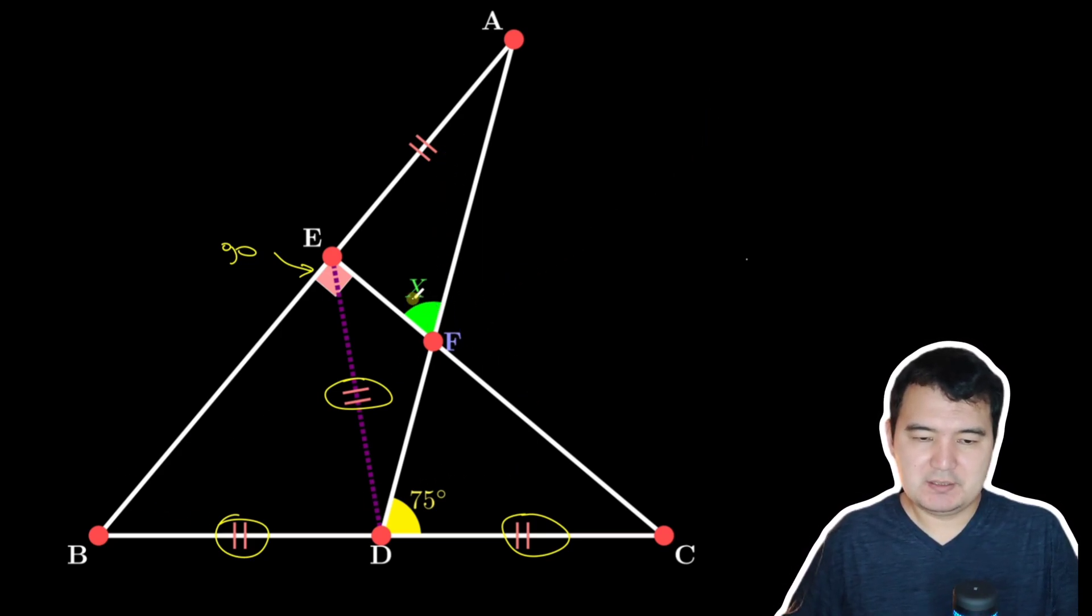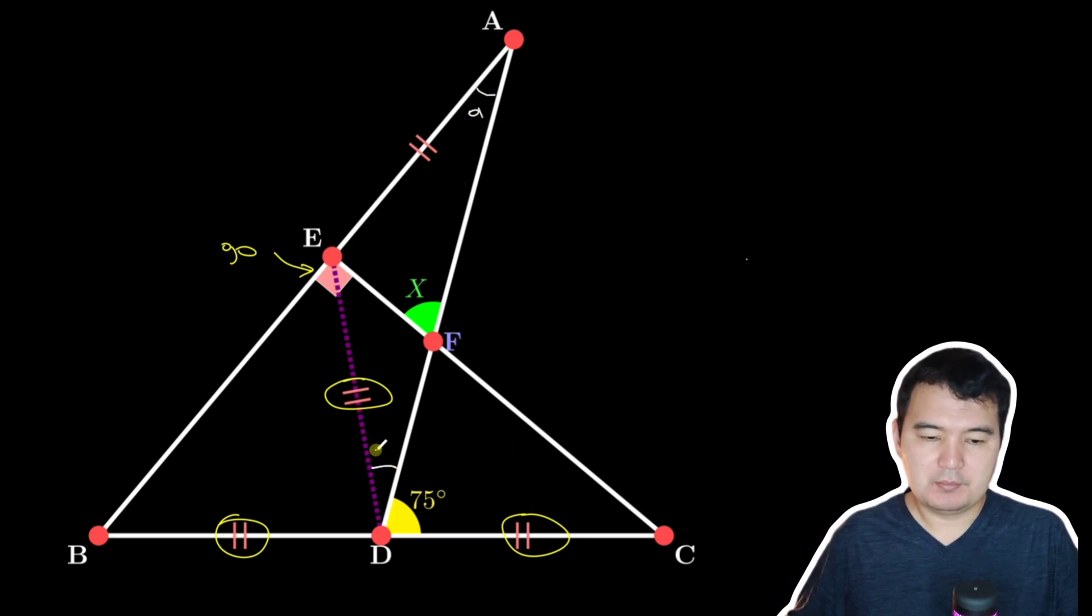So let's say this is X, and let me put angle A here. Because of isosceles triangle AED, we have A here as well, due to the equality of these two sides.